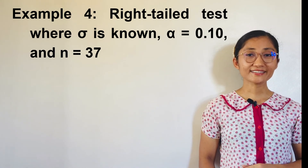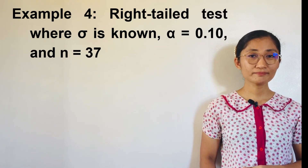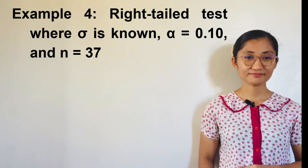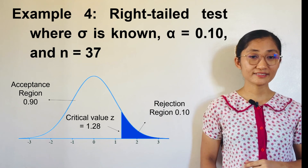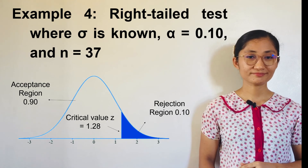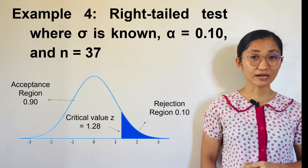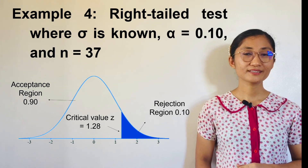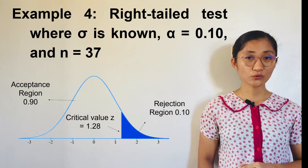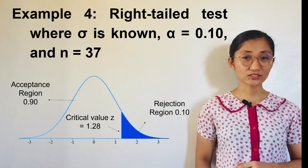Example 4: Right-tailed test where sigma, or population standard deviation, is known; alpha equals 0.10 and n equals 37. This is a one-tailed test with 90% of the area under the curve in the acceptance region. Z-score is used since sigma is known. The critical value is Z equals positive 1.28. Therefore, the rejection region is Z greater than or equal to positive 1.28.